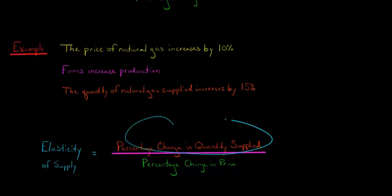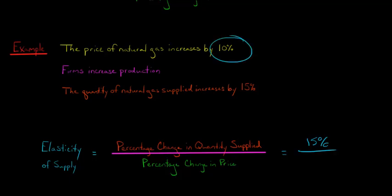We take the percentage change of quantity supplied, which is 15%, and divide it by the change in the price. The price of natural gas increased by 10%, so when we divide those we get 1.5. We would say that the elasticity of supply is elastic.